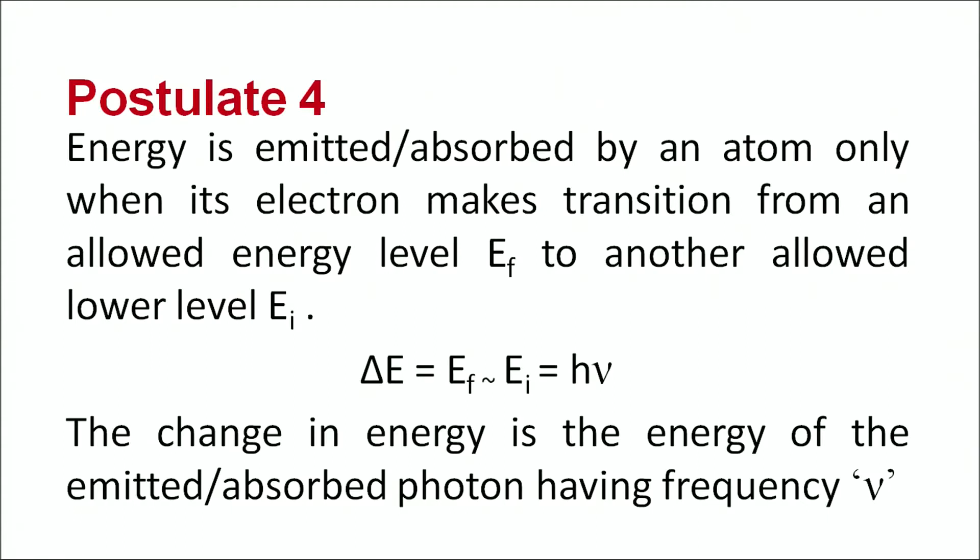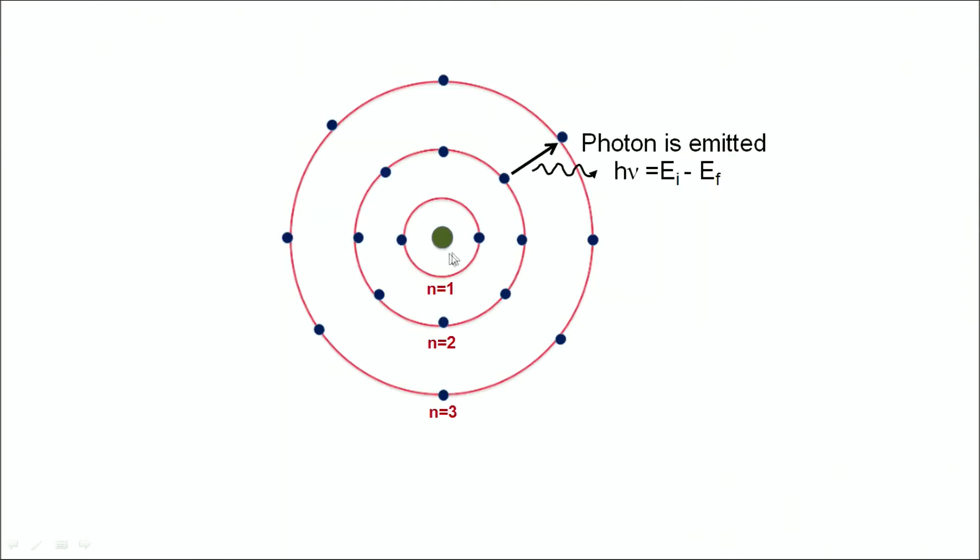From where does this discretization come into picture? According to Bohr's model, positive nuclei is at the centre and electrons are revolving in different orbits.